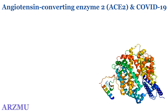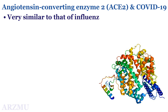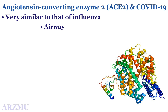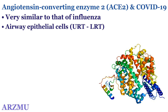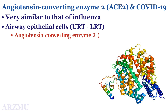The pathophysiology of COVID-19 is very similar to that of influenza. COVID-19 involves infection of the human airway epithelial cells, first affecting the upper respiratory tract and subsequent progression to the lower respiratory tract.